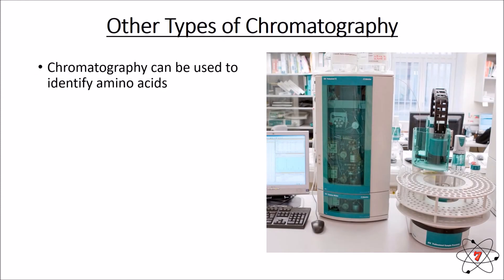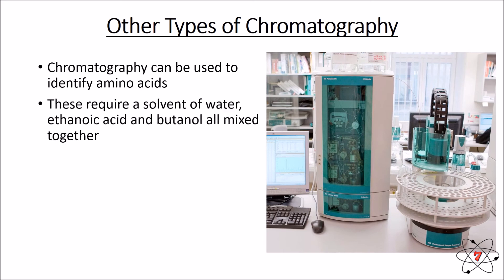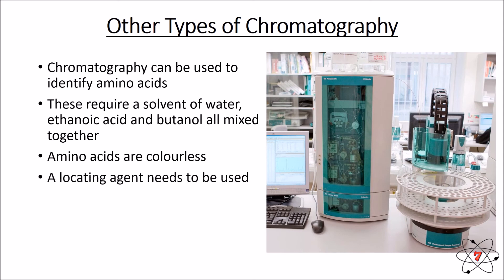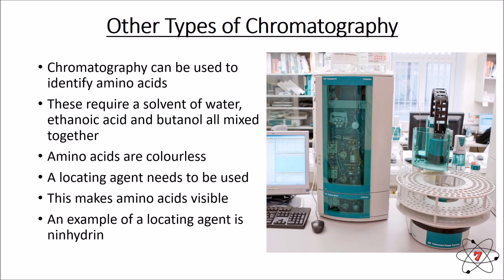There are other types of chromatography as well. Chromatography can be used to identify amino acids, using a solvent mixture of water, ethanoic acid, and butanol. Amino acids are colorless, which means we can't see how far they've moved, so we need to add a chemical called a locating agent. This makes the amino acids visible so we can measure how far they've moved, calculate their RF value, and identify which amino acid we're dealing with. A good example of a locating agent is ninhydrin.